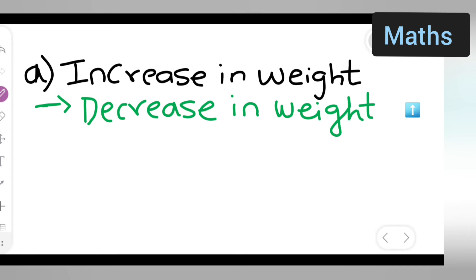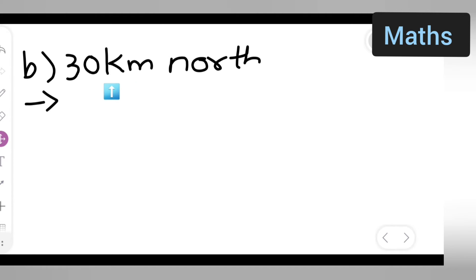Next, let us see what is the opposite of 30 km north. The opposite of 30 km north will be 30 km south. Write down 30 km south.